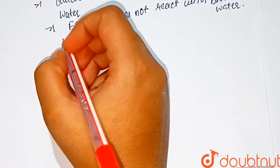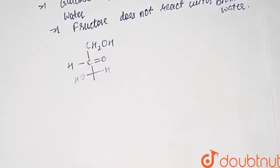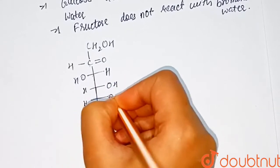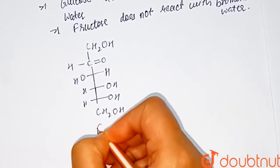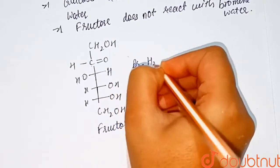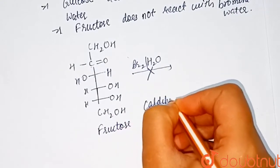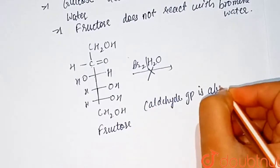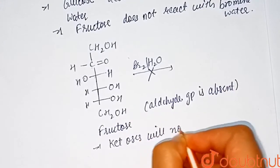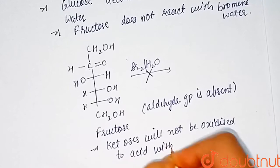Let us see the structure of fructose: CH2OH, C=O, H, OH, OH, H, OH, and CH2OH — this is fructose. Fructose does not react with bromine water because the aldehyde group is absent. In fructose, a ketose will not be oxidized to an acid with bromine water.